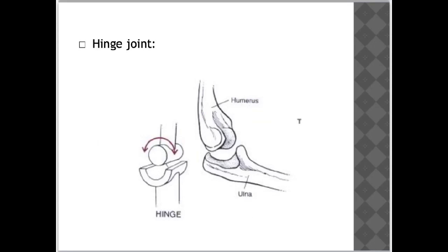Hinge joints are similar to hinges on a door. This joint only allows restrictive movement between the two bones — movement occurs in two directions, forwards and backwards. A hinge joint is found in the knee and the elbow.